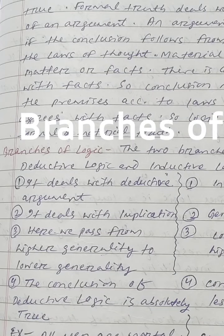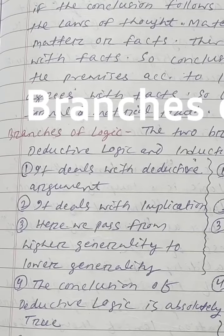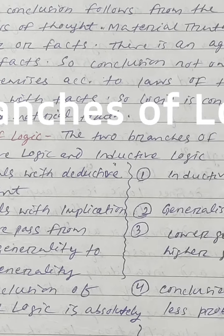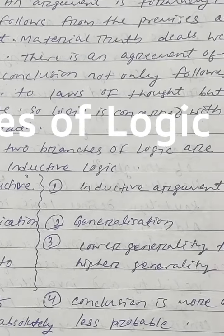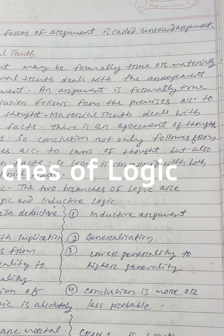In deductive logic, we pass from higher generality to lower generality — that means from universal to particular, from all to some. And in inductive logic, we pass from lower generality to higher generality — that means from particular to universal, from some to all.